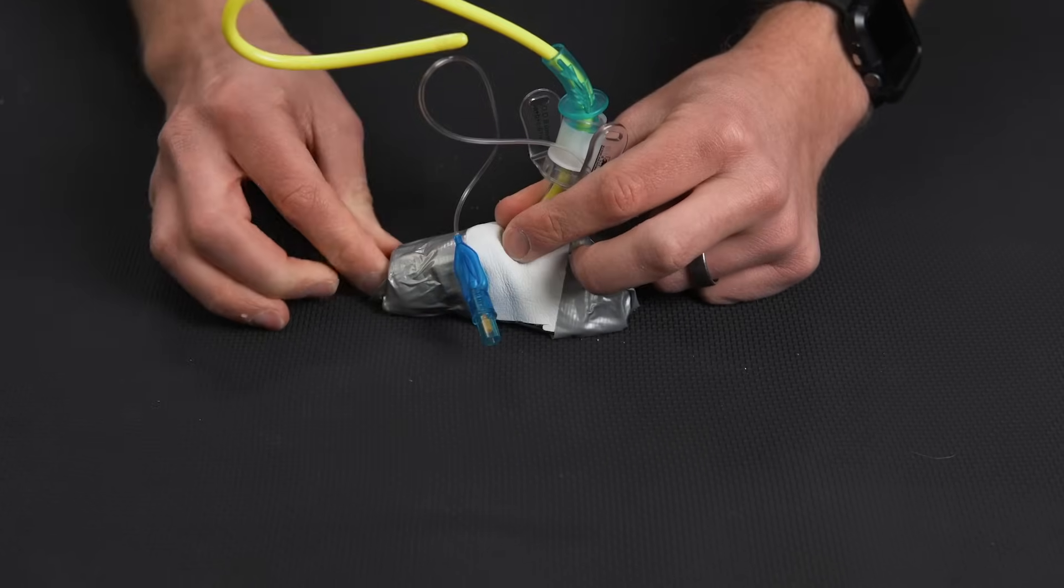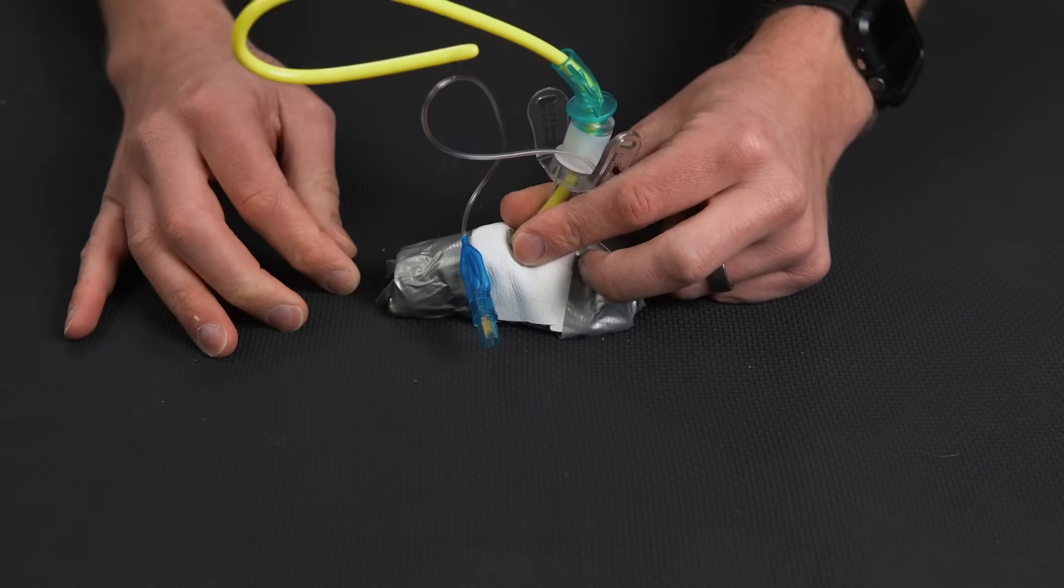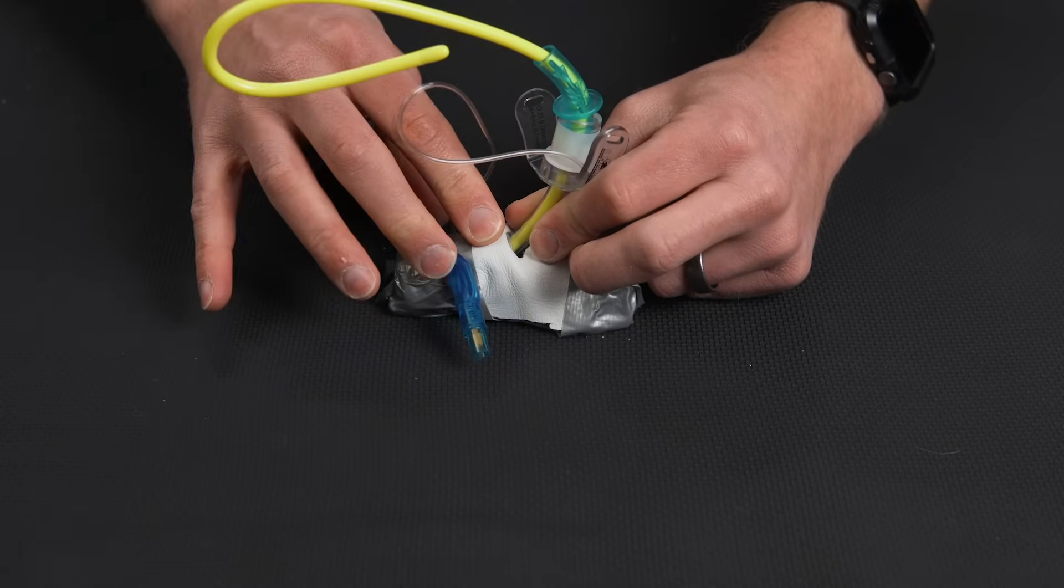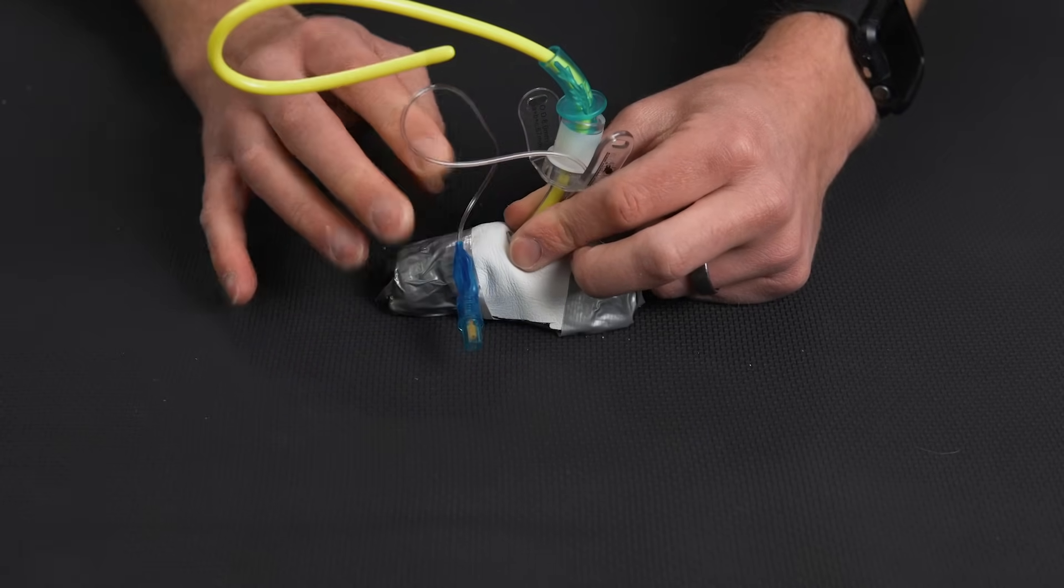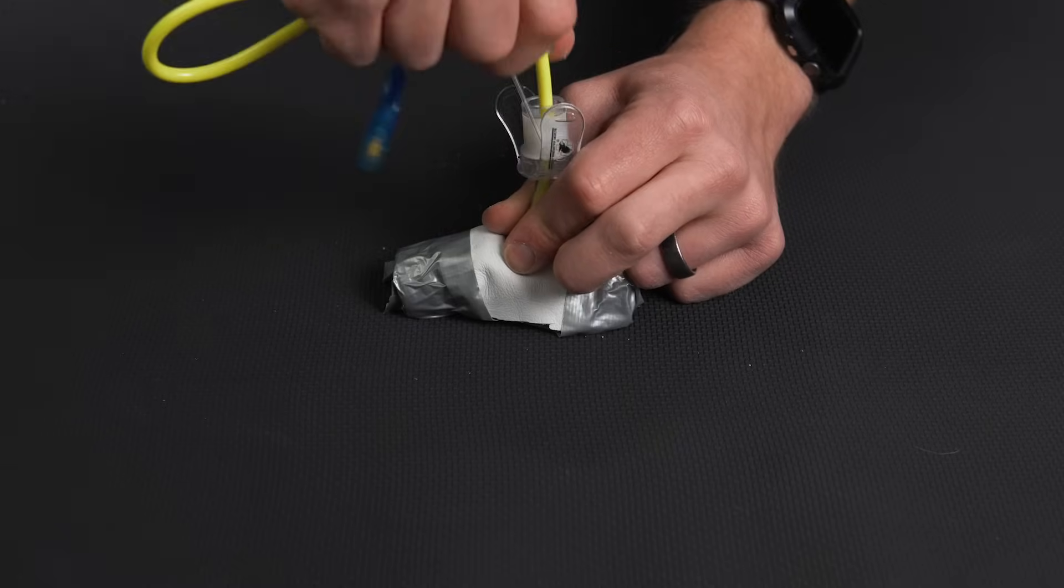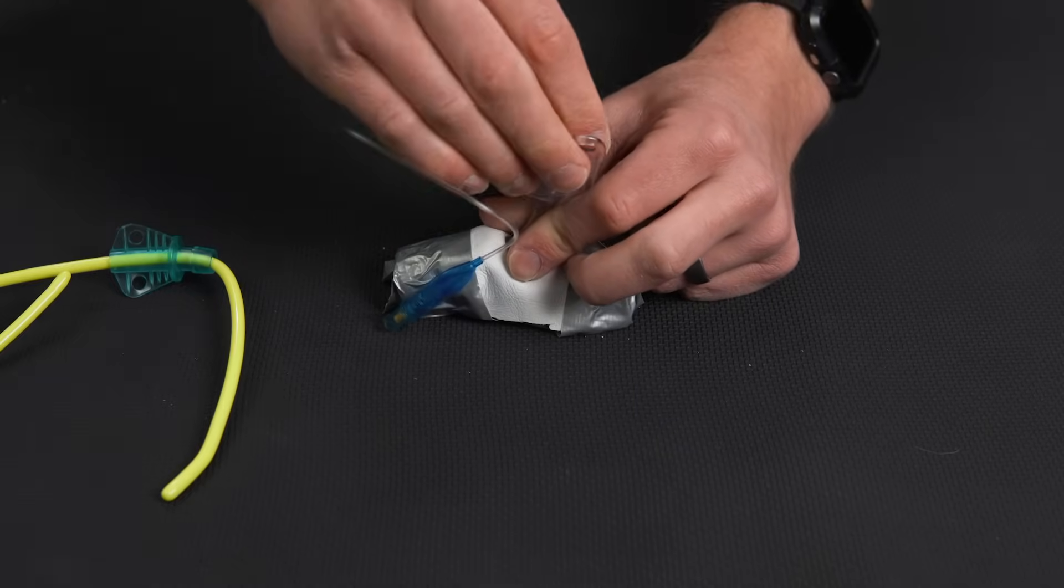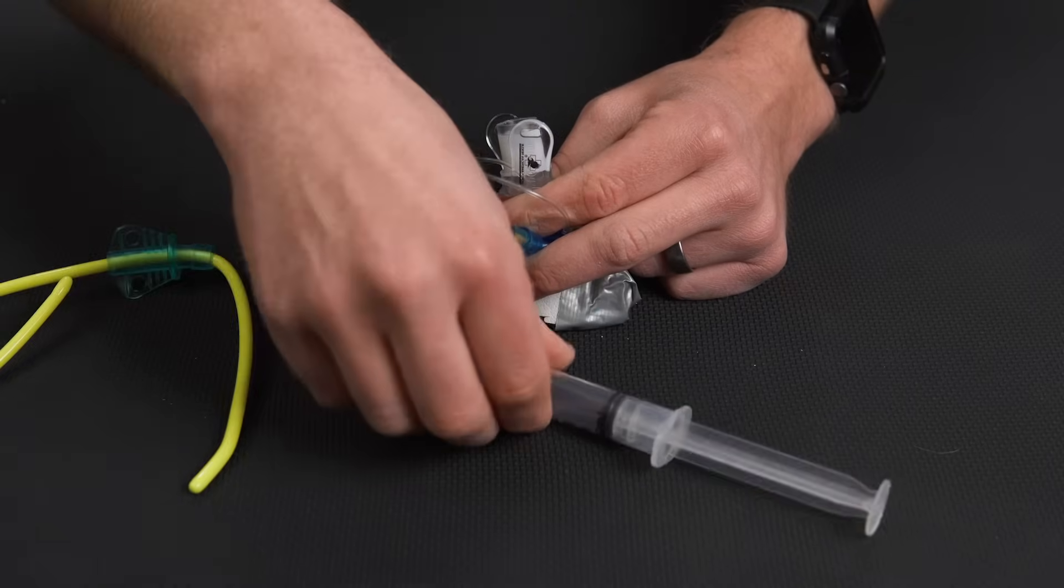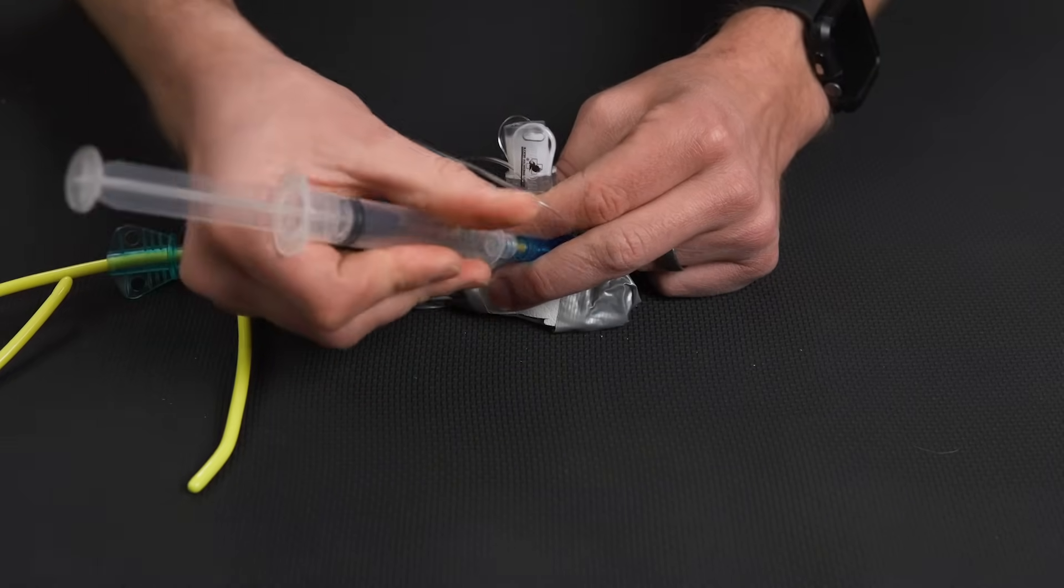So we have the tube in place and we want to make sure the balloon is all the way into the trachea, but only so. We can then take the bougie, take that out, make sure this is sitting right where it needs to be, and then inflate the balloon with the recommended amount of air.